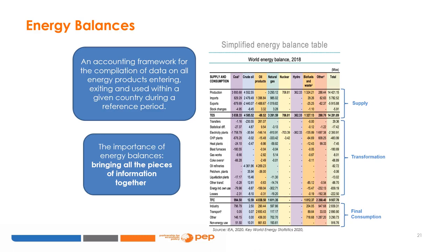An energy balance helps us understand how products are transformed into one another, highlights the various relationships among these products, and shows how all energy types are ultimately used. Key data in the balances includes total primary energy supply, TPES, total final consumption, TFC, and data on electricity generation by fuel type. TPES shows the overall energy supply available for use in a country, while TFC shows the energy actually used by final consumers — in homes, transportation, and businesses. The electricity output data shows the relative weights of all forms of energy in the generation mix. In TFC, the electricity product includes electricity generated from all the various energy sources, while in TPES, only the corresponding primary equivalent amounts are included for each generation source.